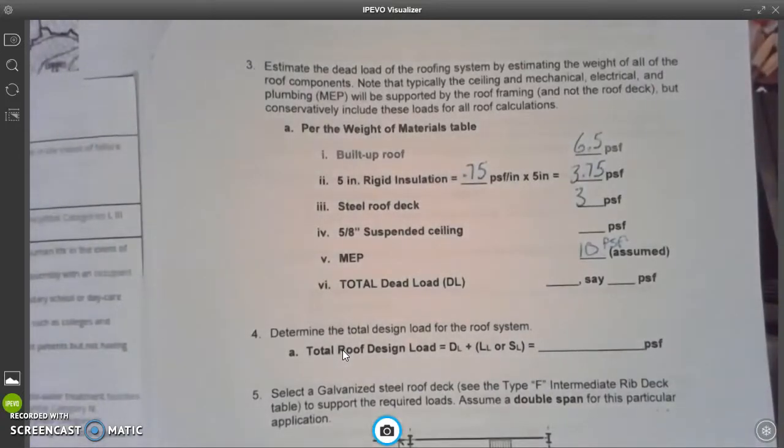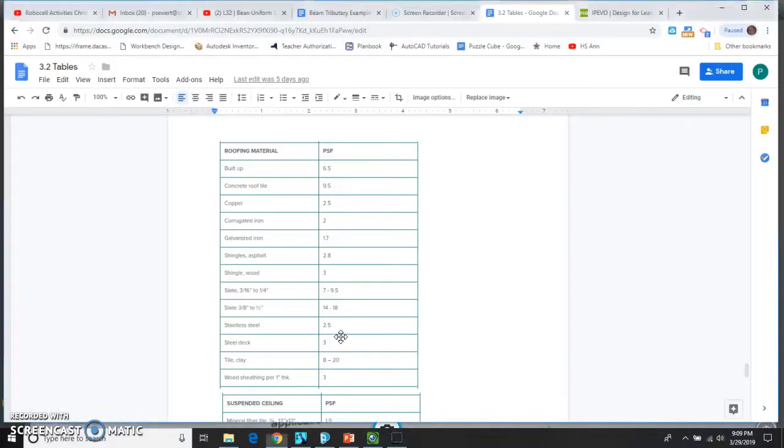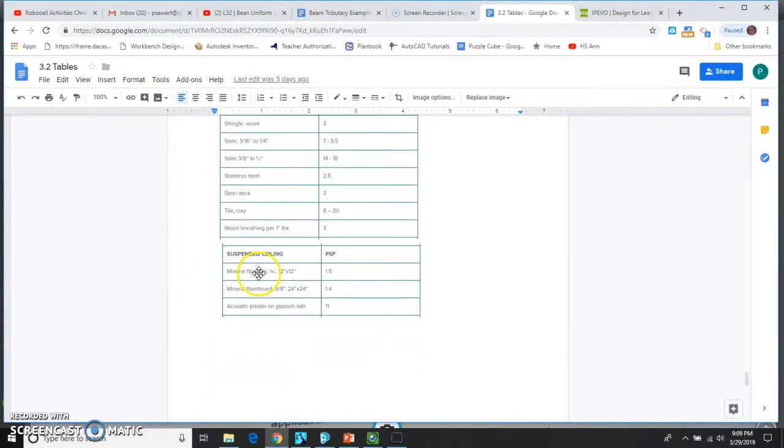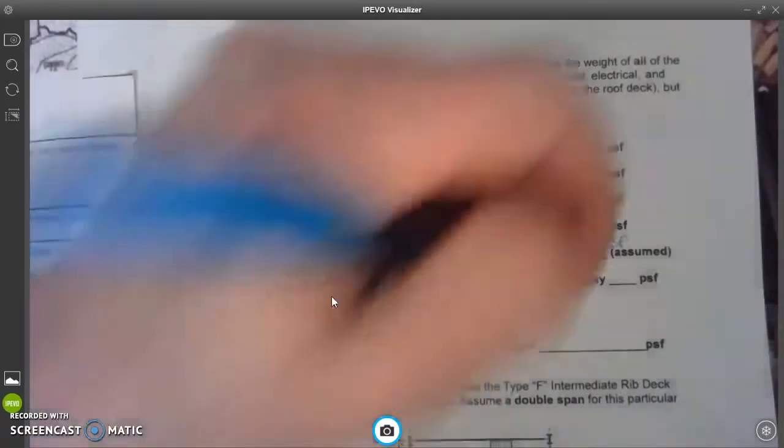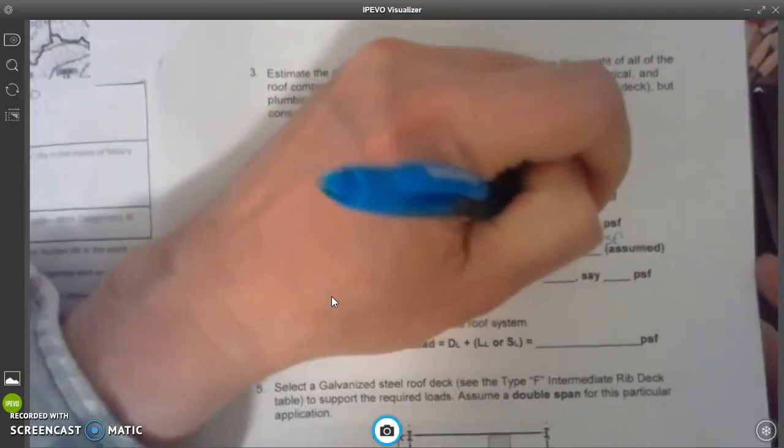And then the last thing is suspended ceiling. Alt-tab. Oh, suspended ceiling, right there. Let's see, material. That's 3.25, mineral fiber board, 5/8 of an inch, 1.4. So 1.4.